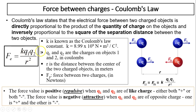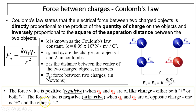In this equation: Q1 is the charge on the first object, Q2 is the charge on the second object, R is the distance between the centers of the two objects, and K is Coulomb's Law constant — 8.99 times 10 to the 9 newton times meter squared over coulomb squared. Fe is in newtons. Q1 and Q2 should be in coulombs, and R is in meters.